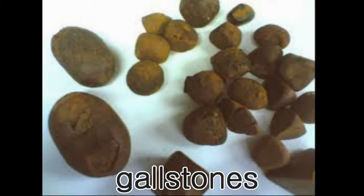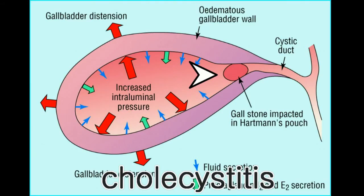Most individuals with gallstones do not have any symptoms and do not require any treatment. However, patients with known history of gallstones do carry a higher risk of eventual development of cholecystitis, an inflammatory condition of the gallbladder. Cholecystitis develops when the gallstones obstruct the normal flow of bile in the gallbladder. When this occurs, the gallbladder becomes inflamed and swollen. The most common symptom associated with acute cholecystitis is abdominal pain in the right upper abdomen.